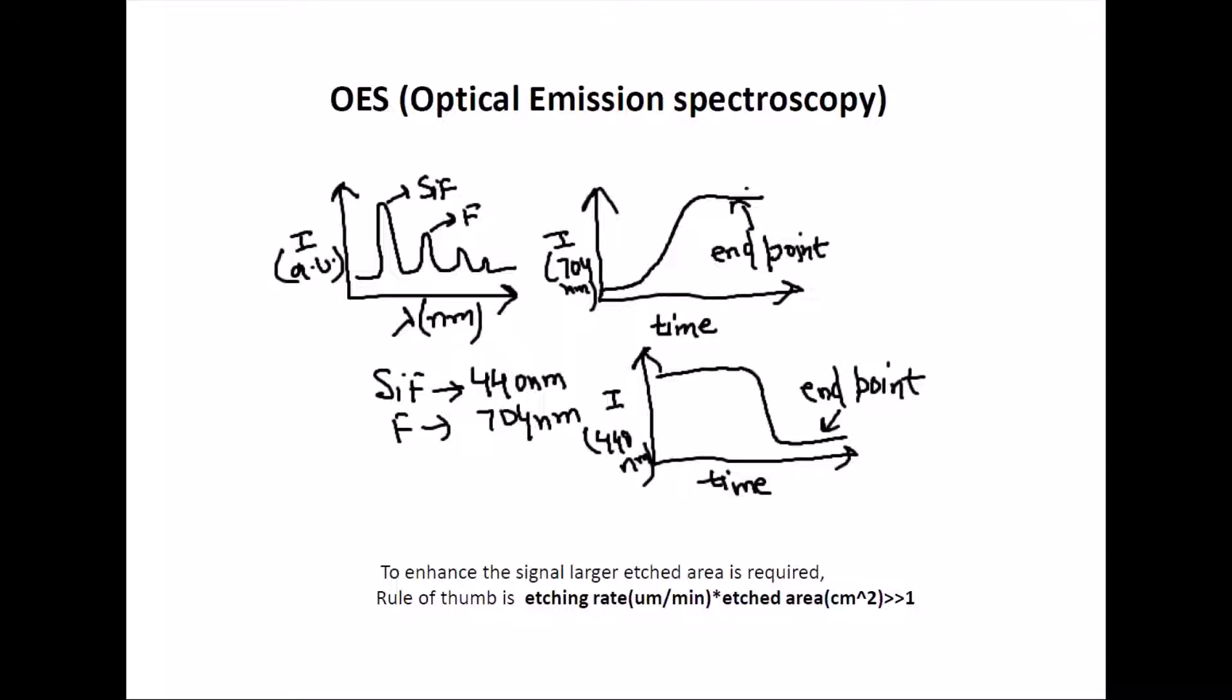The first one is Optical Emission Spectroscopy, which is the industry standard. Basically what happens is they hit a peak, so you're measuring the intensity versus wavelength. These are the excited state or radicals, and they have a particular characteristic peak.